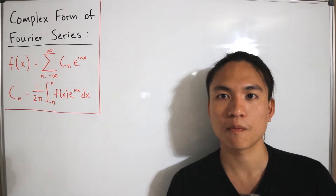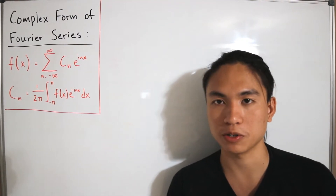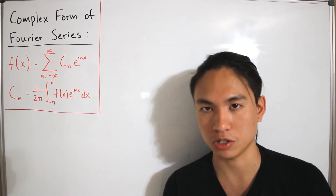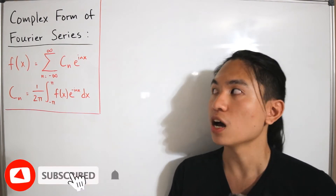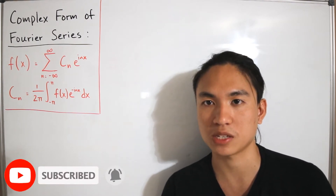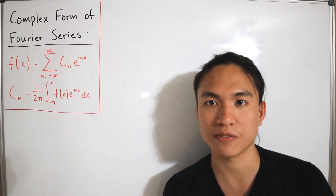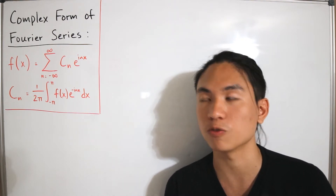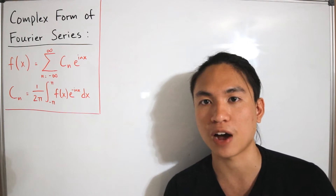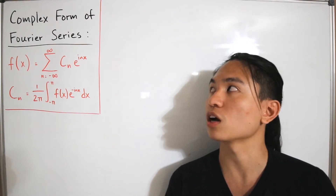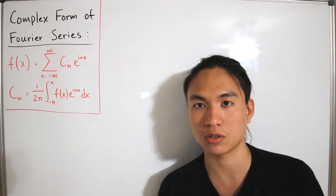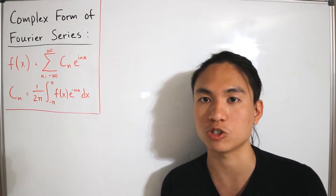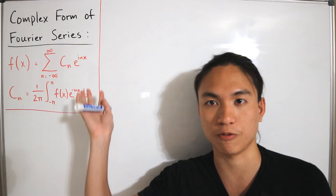Welcome back. Here we have the complex form of the Fourier series, represented as f(x), which is a periodic function equal to a Laurent series. Laurent series deal with the negative degrees of the index: c sub n times e to the power i times n times x. The coefficient c sub n equals 1 divided by 2π times the integral from negative π to π of f(x) times e to the negative i times n times x dx. The complex form has advantages over the real form — mainly that differentiation and integration term by term is much easier when dealing with exponentials.